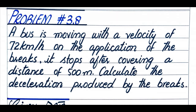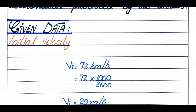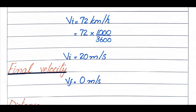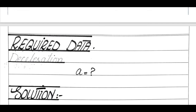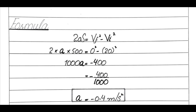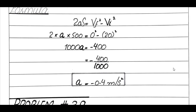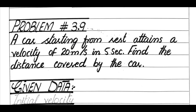Problem number 3.8: A bus moving at 72 km/h stops after covering 500 meters on application of brakes. Calculate the deceleration. Initial velocity is converted to m/s, final velocity is 0, distance is 500 meters. Using 2a·s = vf² − vi², putting the values gives deceleration of −0.4 m/s².